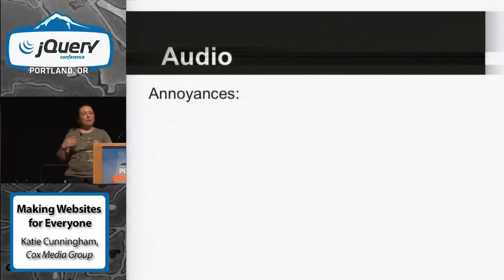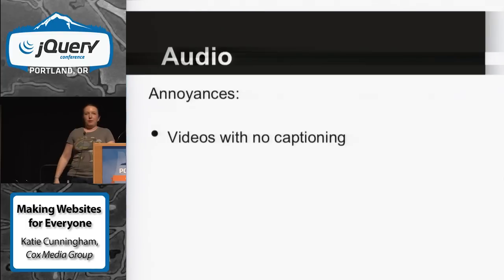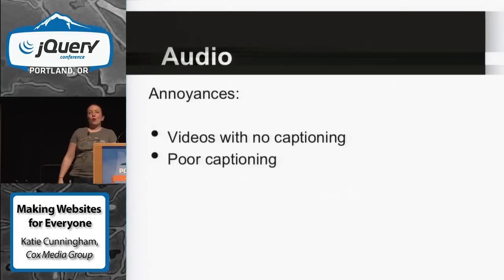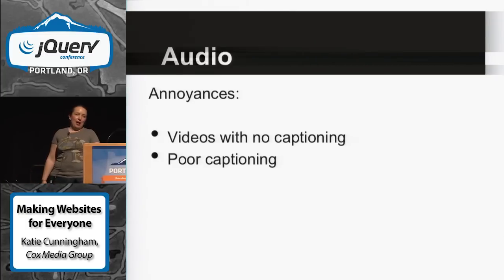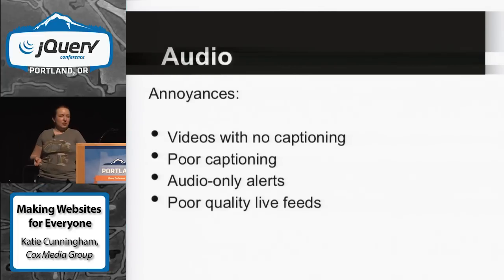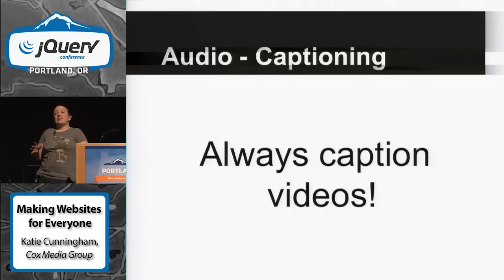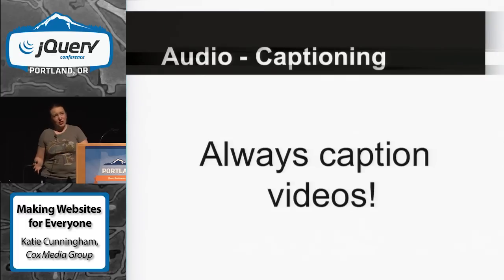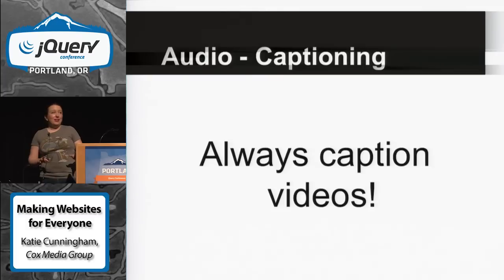Audio — these are people who are deaf, either profoundly deaf or wearing hearing aids. Some of their annoyances: obviously videos with no captioning, poor captioning, and audio-only alerts. Always caption videos. If you have videos on your website, please look into a captioning service — they're out there, they exist, and they're pretty reasonable. Don't assume you can just use YouTube's automatic captions — they're funny, but they don't work. Give it five years, and we'll go over why that's still probably not going to be a great option.